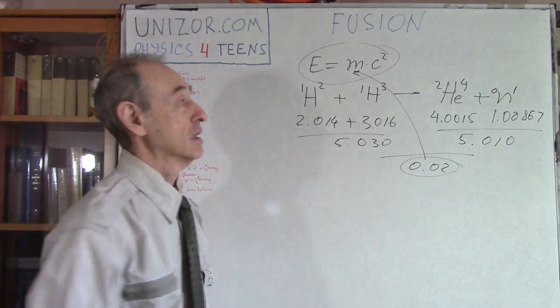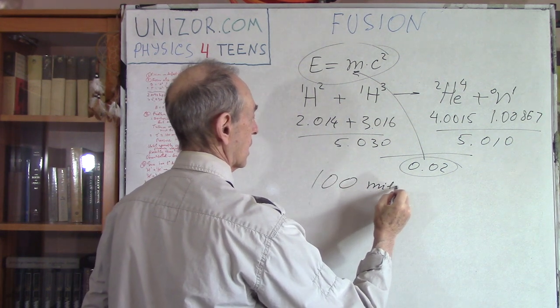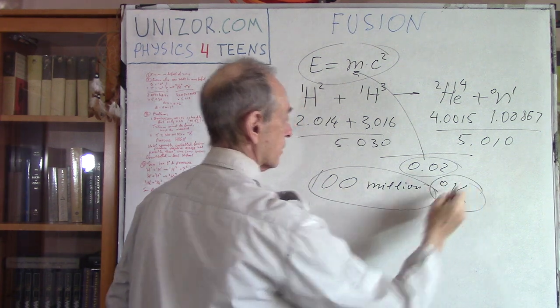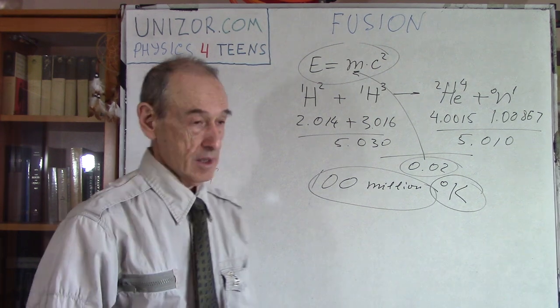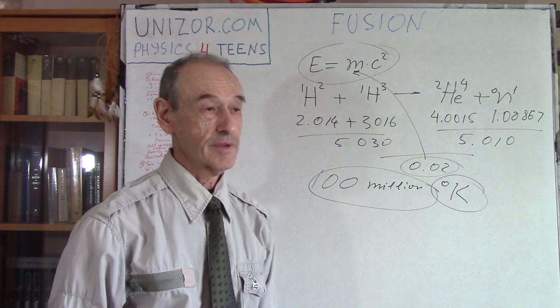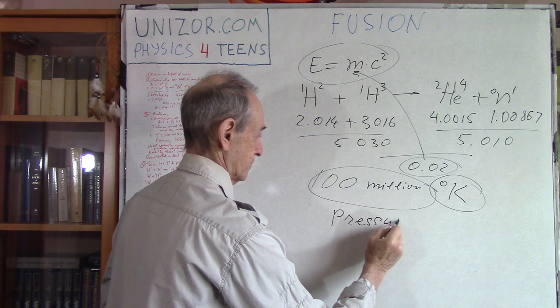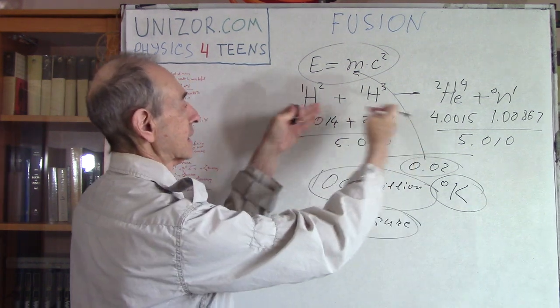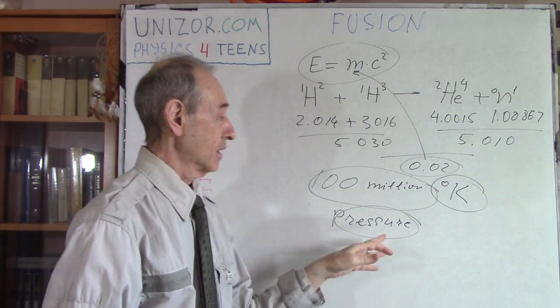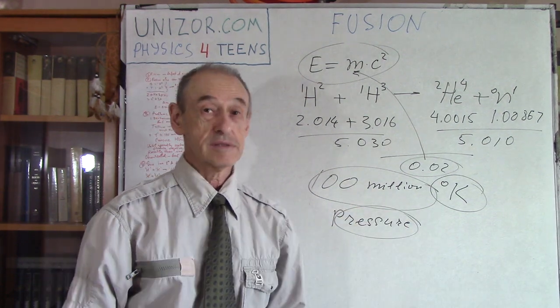The most important problem is that this reaction requires something like 100 million degrees, let's say on the Kelvin scale. That's a lot. Plus pressure sufficient to get these two nuclei close to each other. So huge pressure and huge temperature.